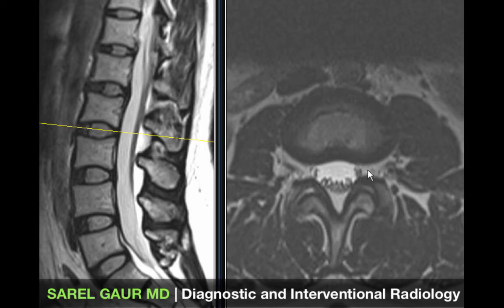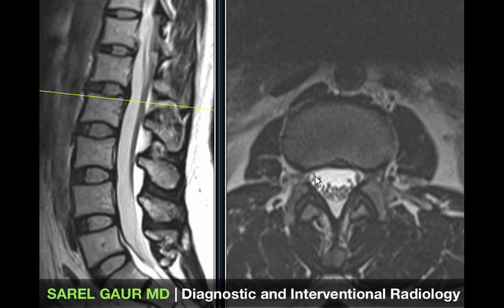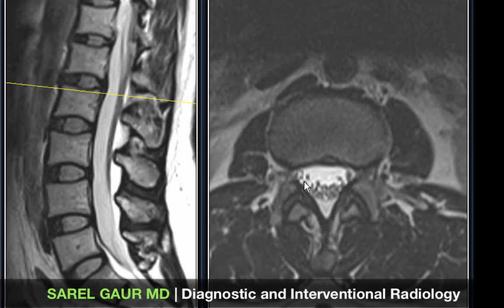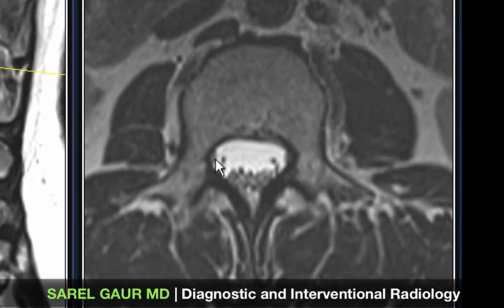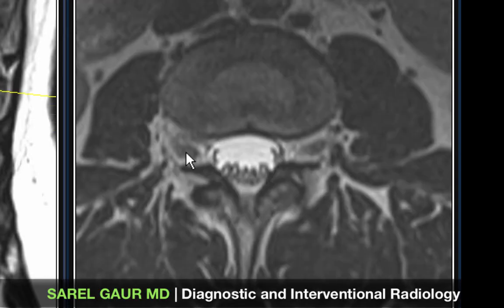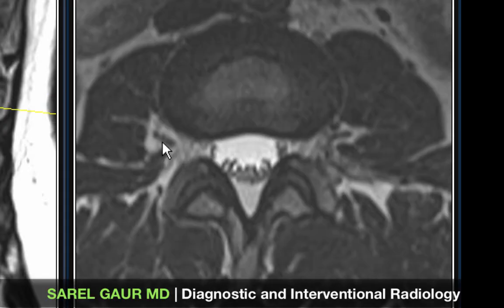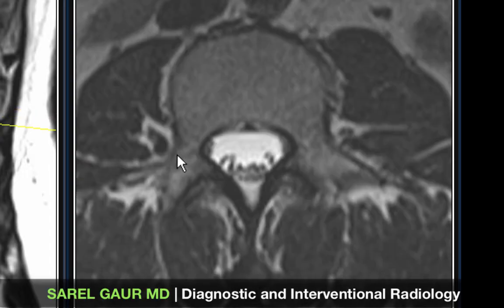Now looking at the central canal and nerve roots: there are two nerve roots here, and as I scroll down they combine and exit through the neural foramen. Here they obtain a dural covering and exit the spinal canal to go out and innervate the body.